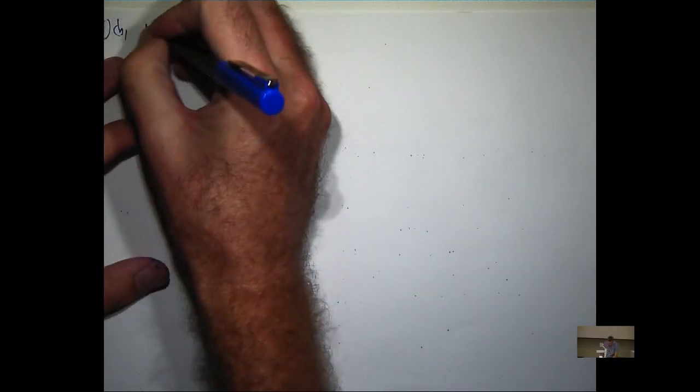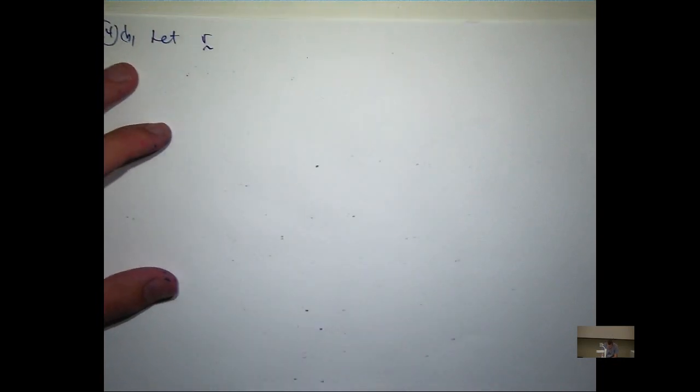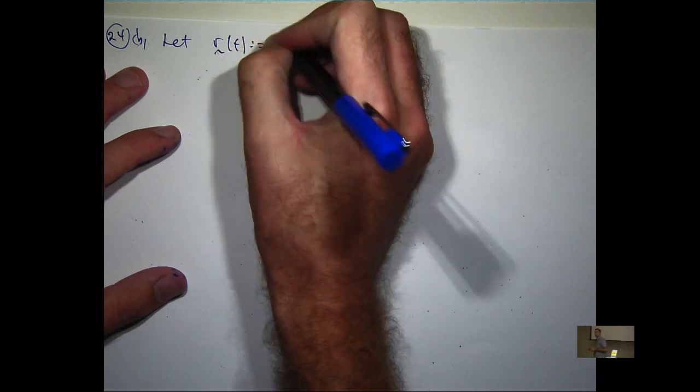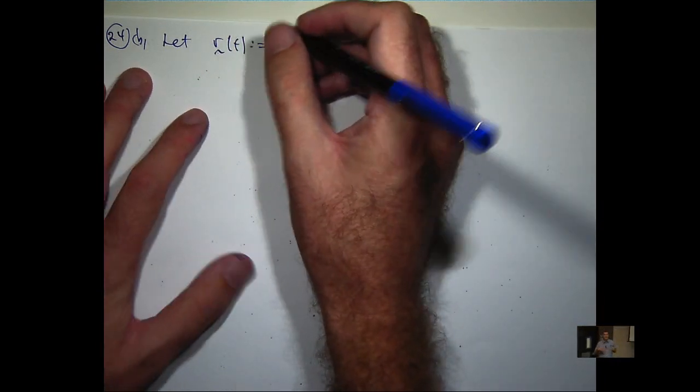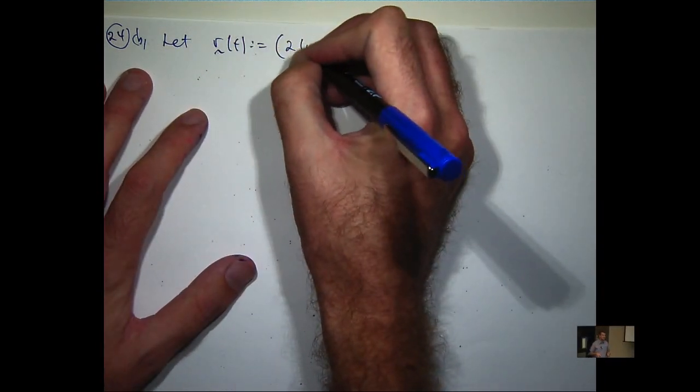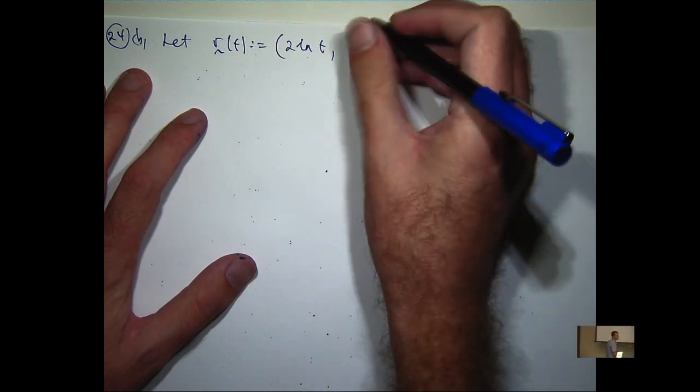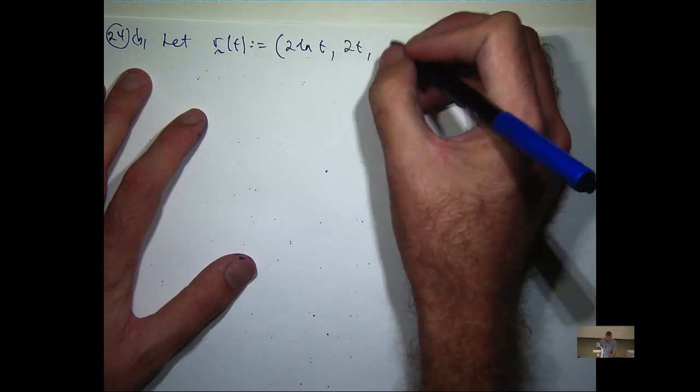All right, so here we've got the following vector function: r(t) equals (2 log t, 2t, half t squared).